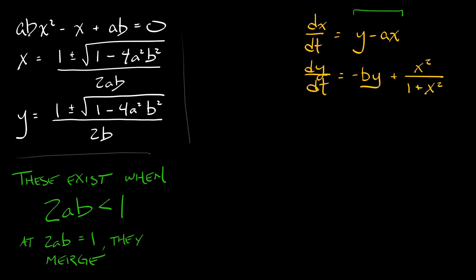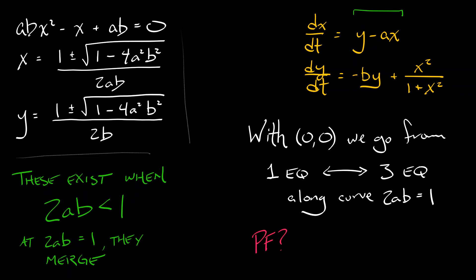Now together with the origin, what is happening is we're going from 1 equilibrium to 3 equilibria as we cross this curve in the a, b plane where ab equals 1/2. So what kind of bifurcation are we seeing there? Well, going from 1 equilibrium to 3 equilibria, that's a hallmark of a pitchfork. But you have to be careful because this is not a pitchfork bifurcation. This is a saddle node bifurcation.